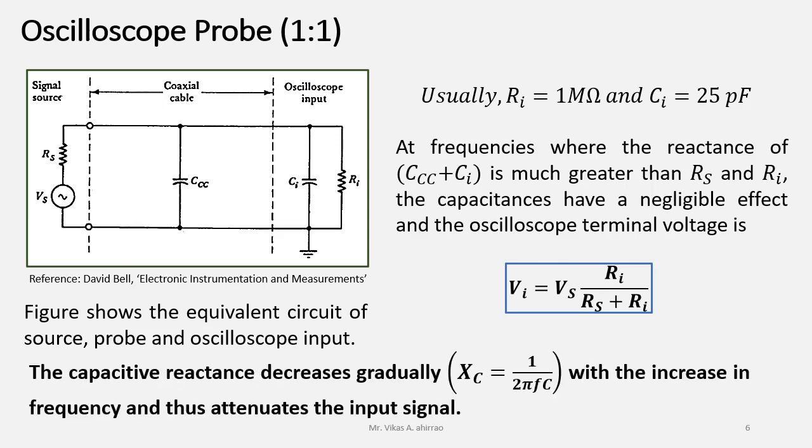The capacitive reactance decreases gradually as we know Xc, that is the capacitive reactance, is equal to 1 upon 2 pi F times C where F will be the signal frequency. With the increase in frequency and thus attenuate the input signal. Hence, the oscilloscope probe which is a simple coaxial cable of approximately 1 meter of length will attenuate the signal at certain high frequency.